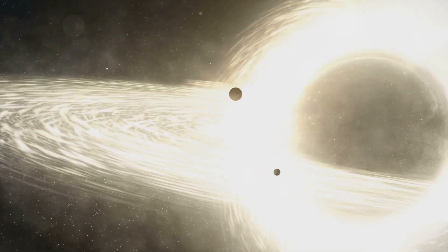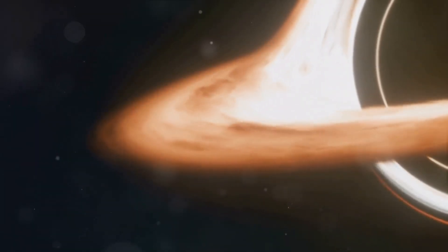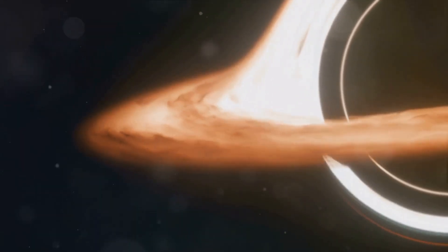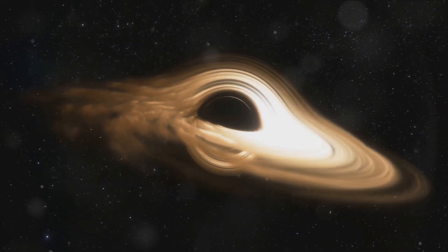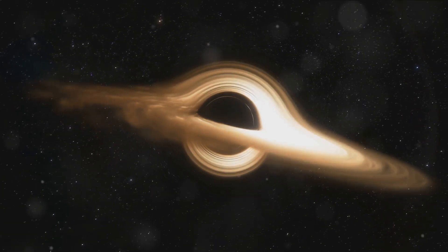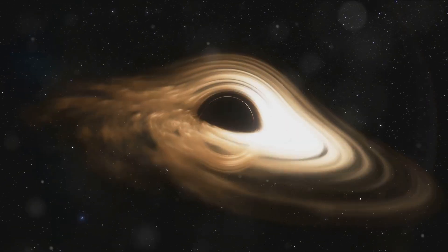Within a black hole lies a point of infinite density known as a singularity. Here, matter is compressed into an infinitely small space. Surrounding this singularity is the event horizon, a boundary beyond which nothing can escape the black hole's gravitational pull. This includes light, the fastest thing in the universe, hence the term black hole.